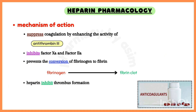Regarding the mechanism of action, heparin suppresses coagulation by enhancing the activity of antithrombin 3, which inhibits factor 10a and factor 2a and prevents the conversion of fibrinogen to fibrin. In this way, heparin inhibits thrombus formation.